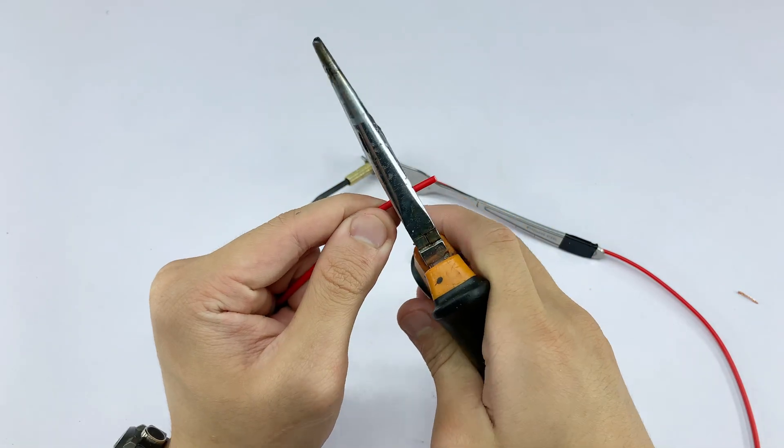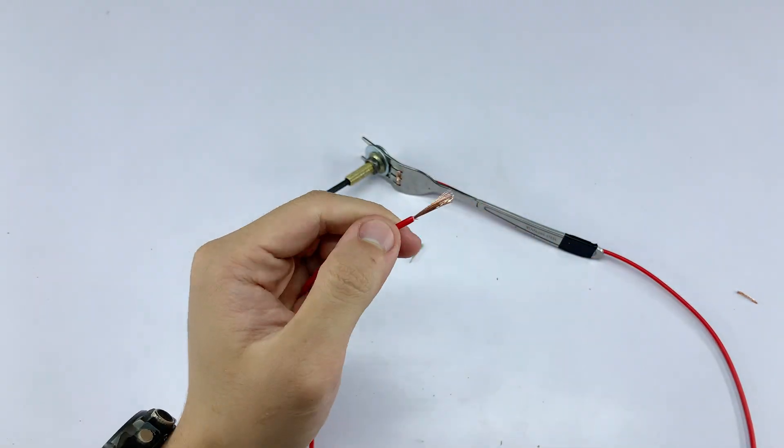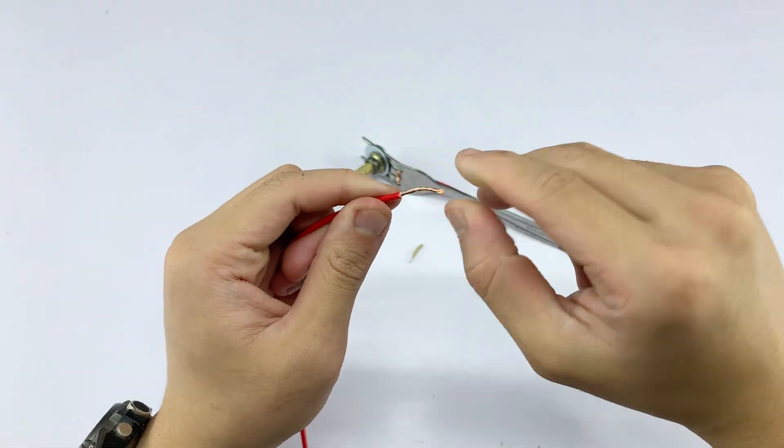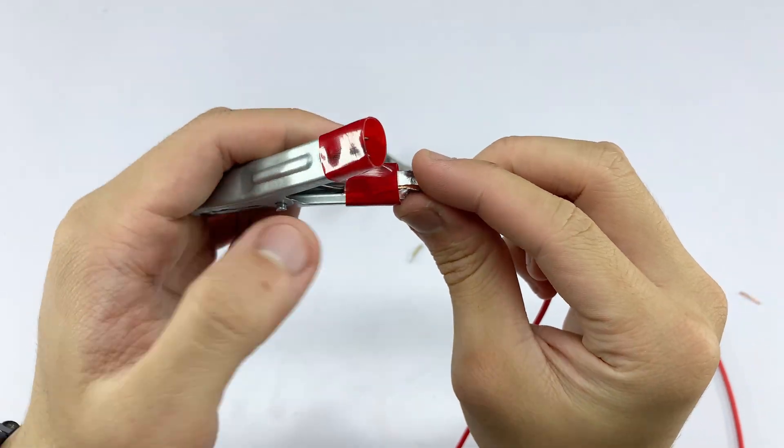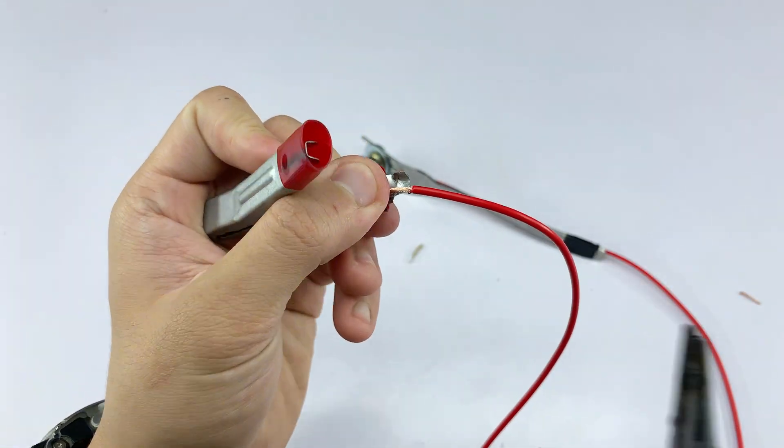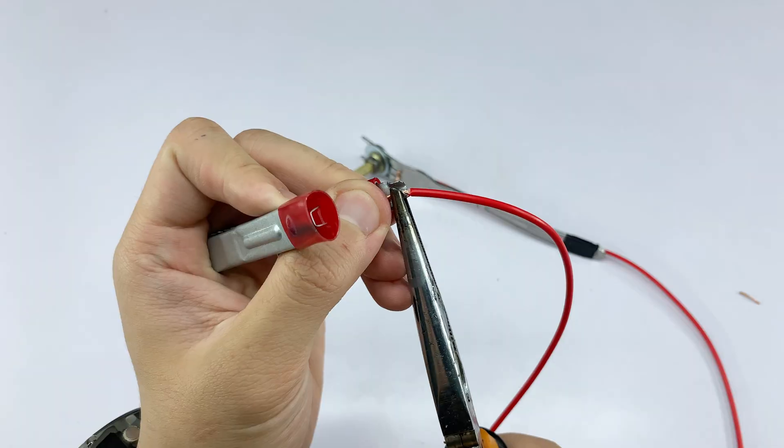I'm stripping the free end of our red wire and securing it to the red alligator clip. To easily connect our tool to a power source, I'm using alligator clips. This will be for the positive terminal of our power supply.